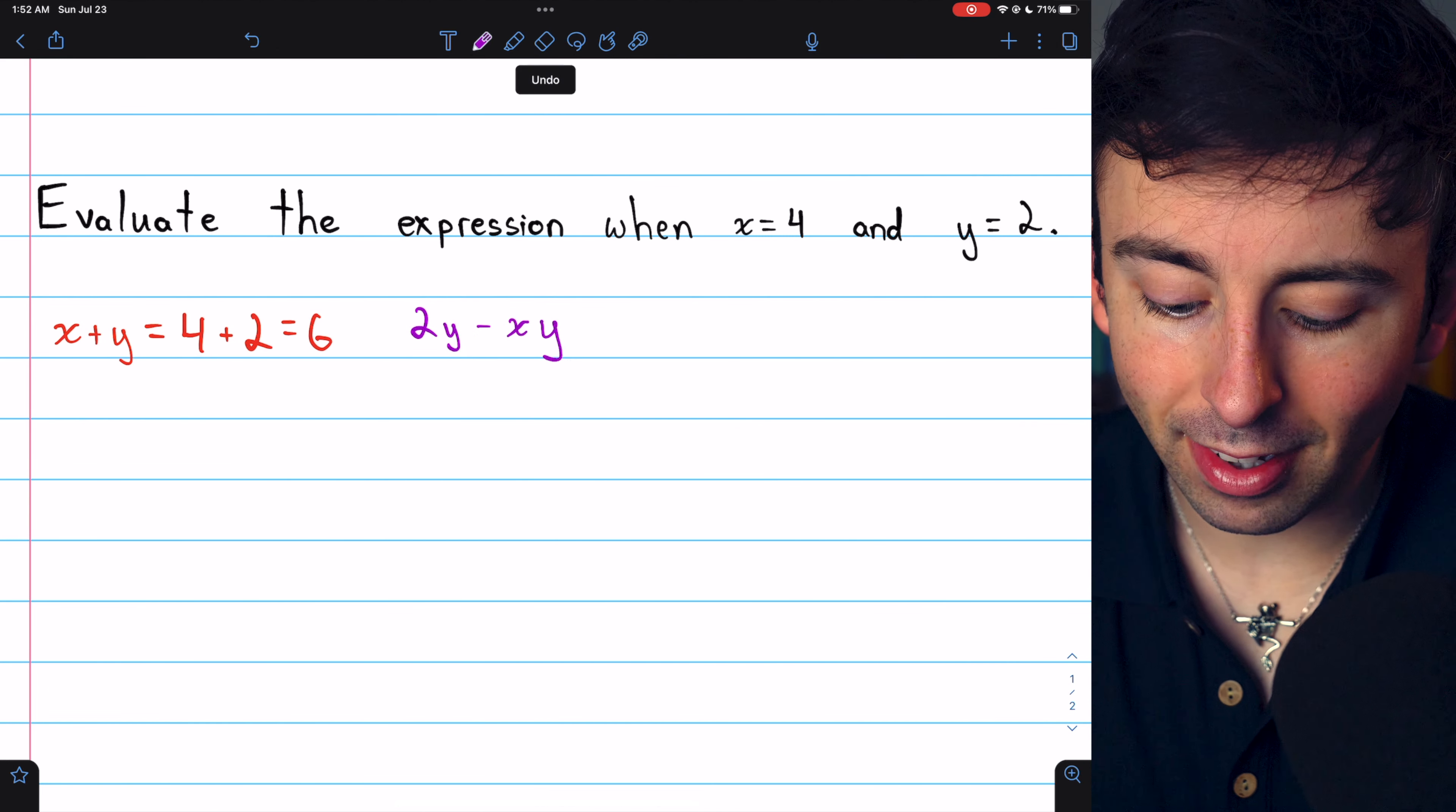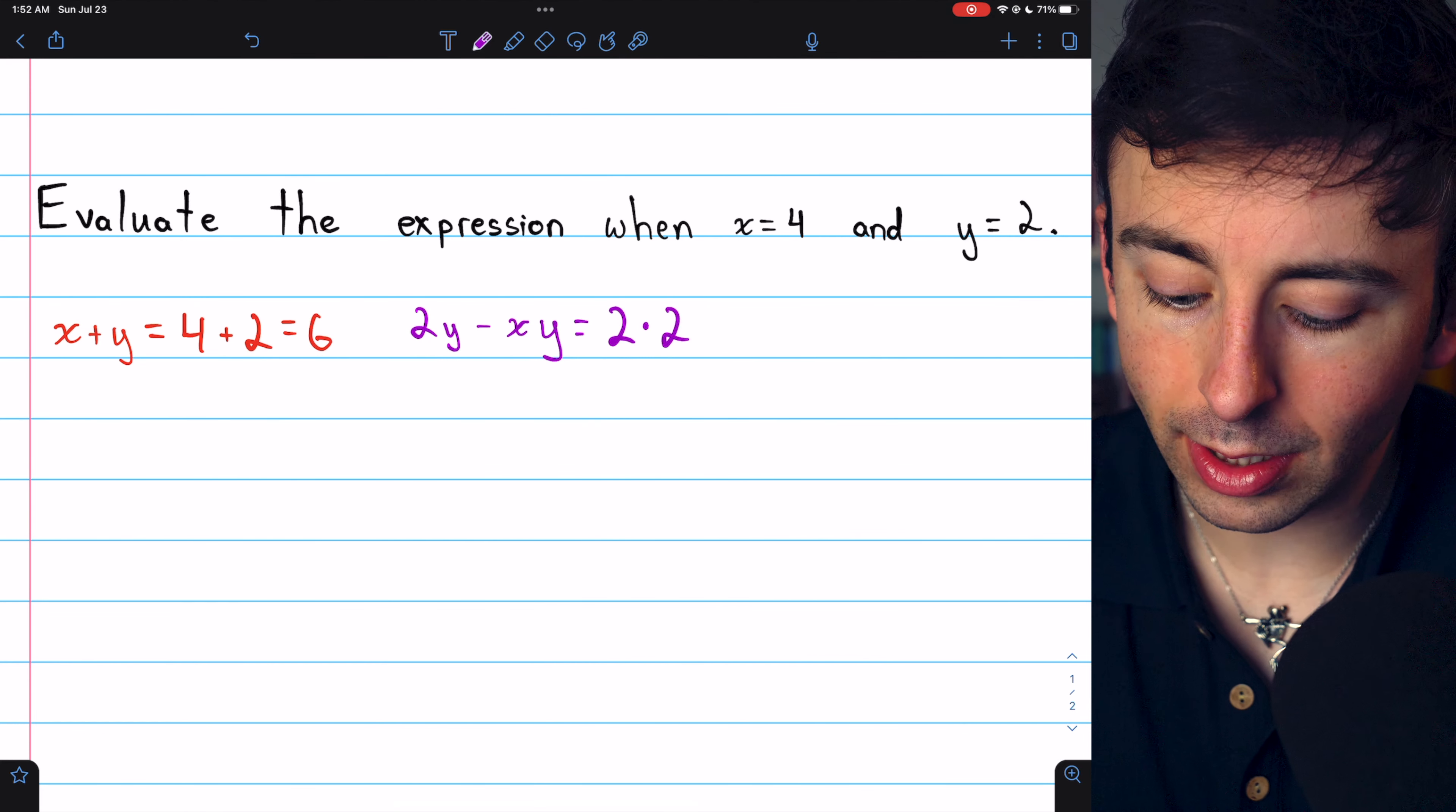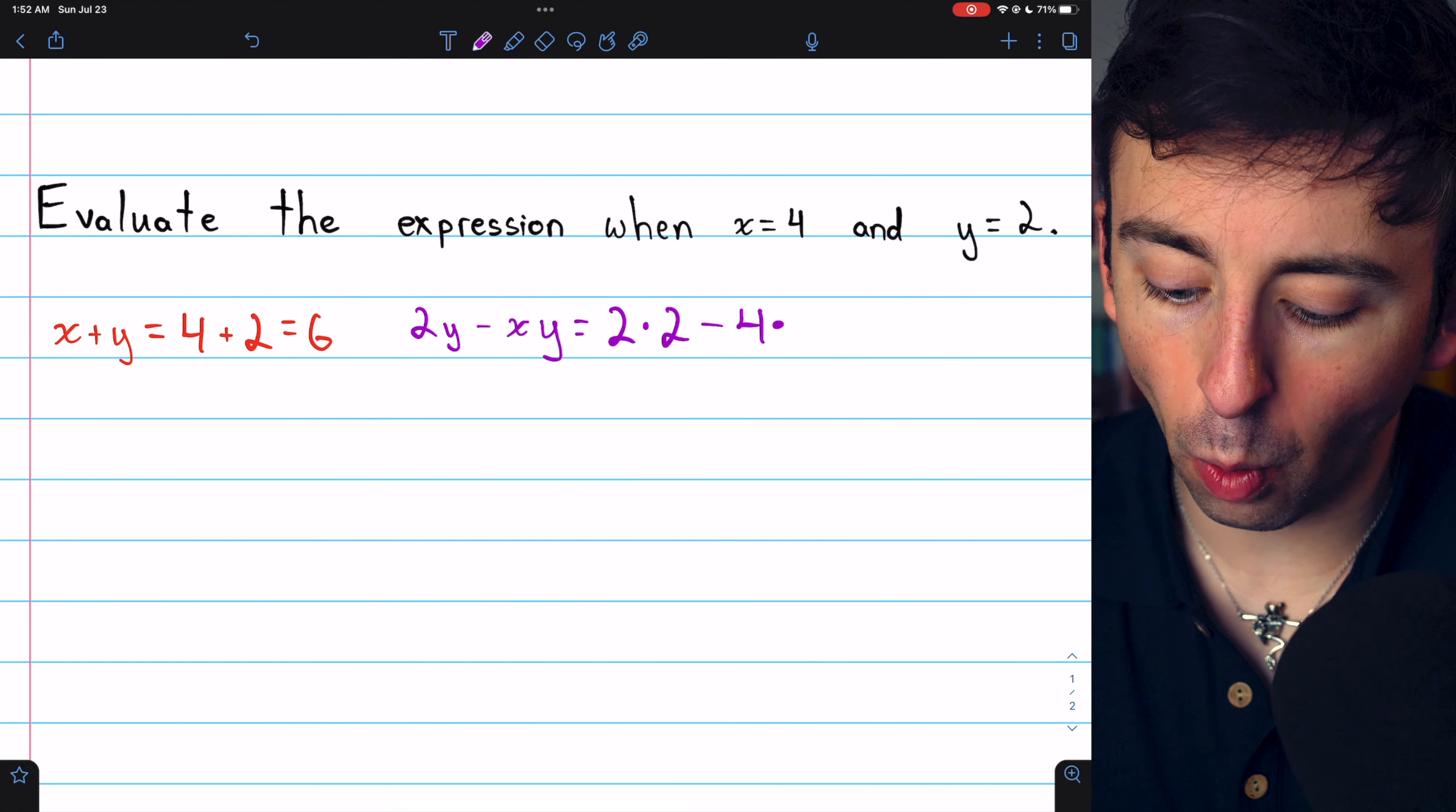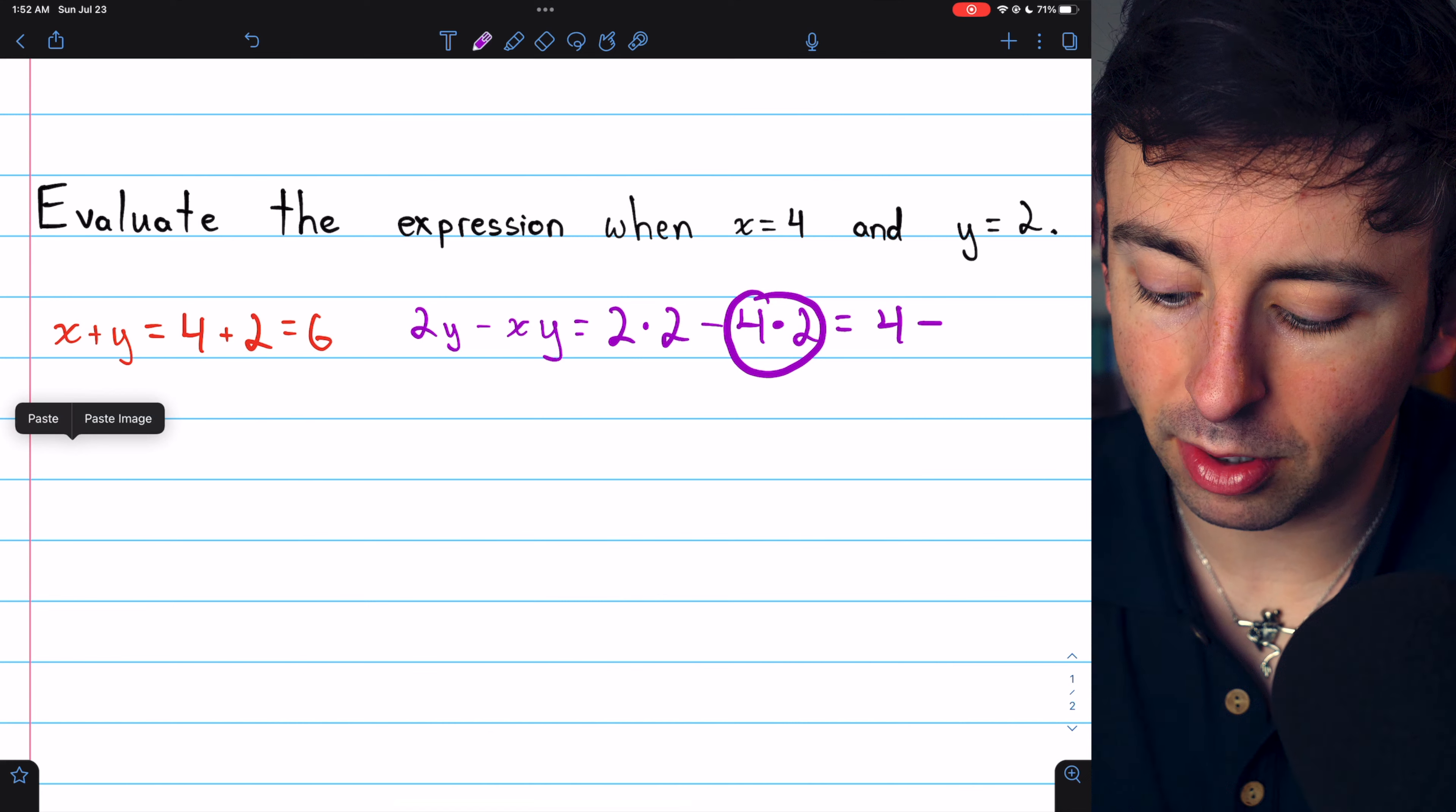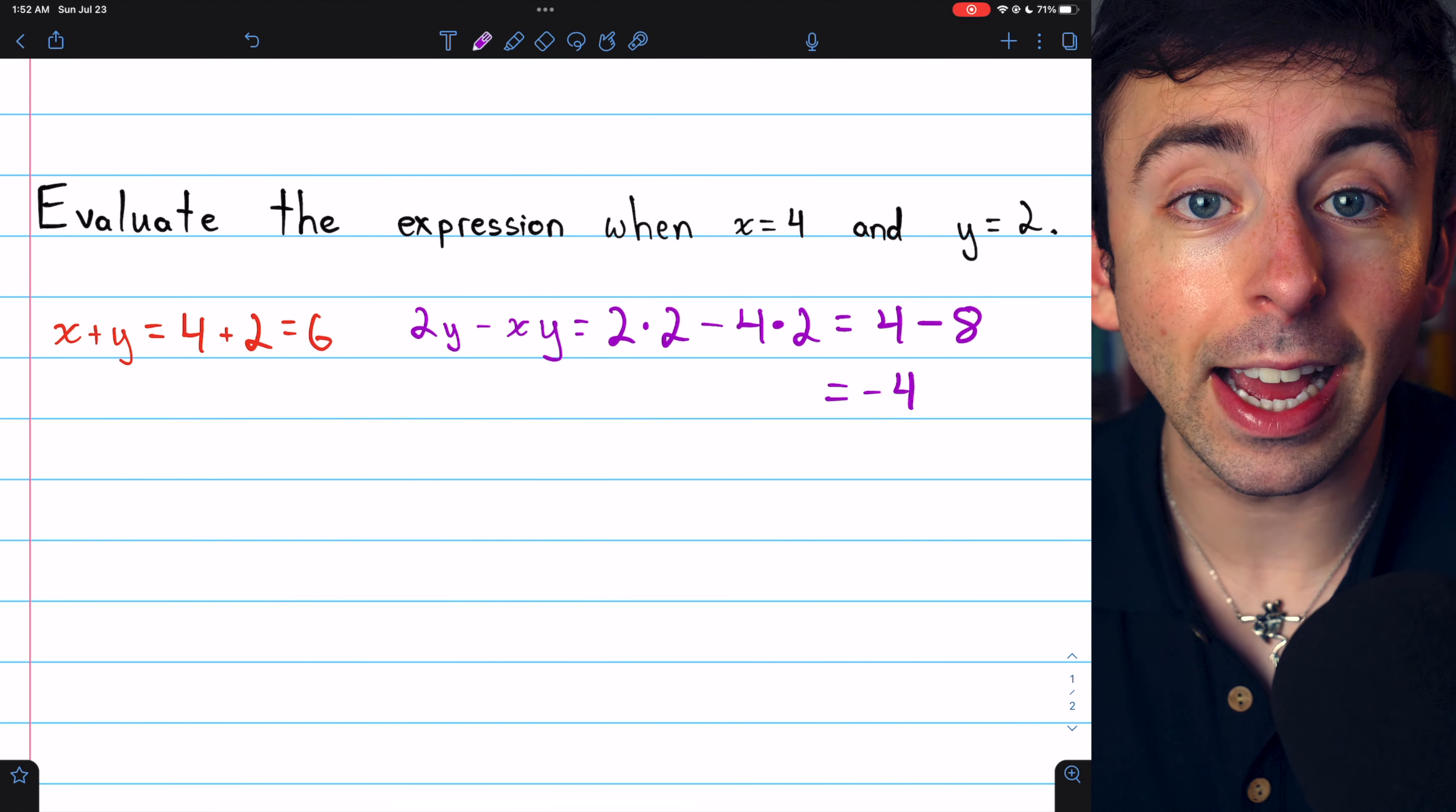What about 2y minus xy? Well, again, y is 2, so it's 2 times 2 minus x is 4, so xy is 4 times 2. 2 times 2 is 4, and we're subtracting 4 times 2, which is 8. And 4 minus 8 is negative 4.